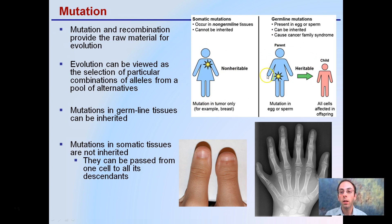The mutation in the germline is what's going to affect the offspring. It's important to make note of that.